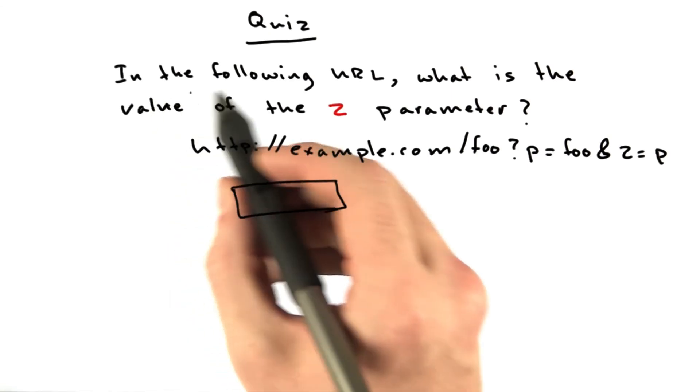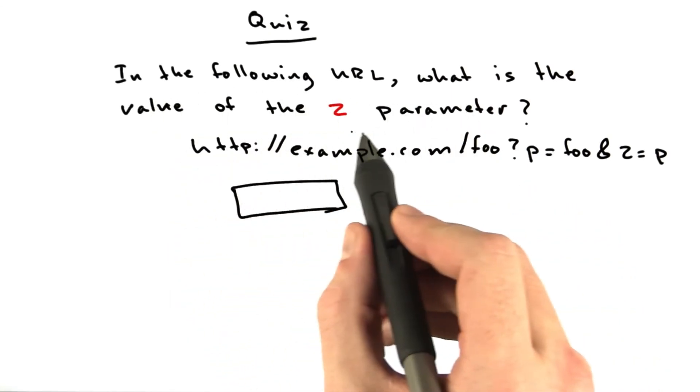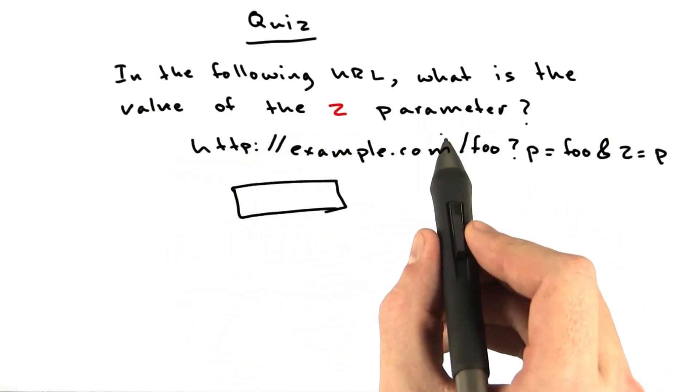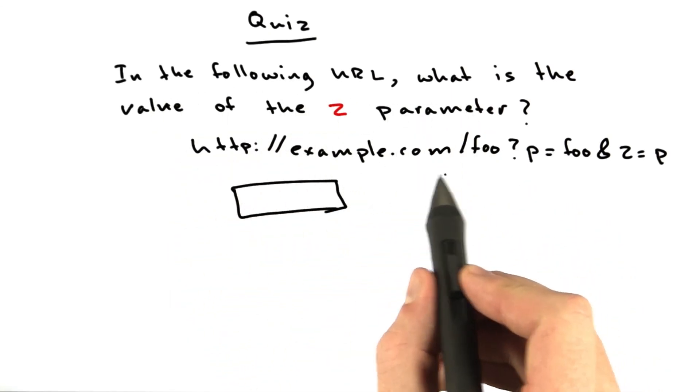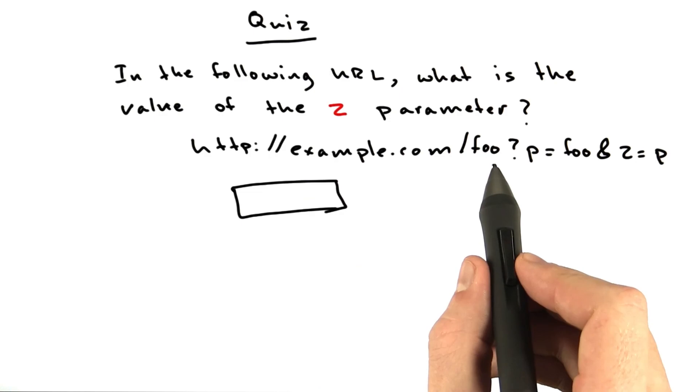In the following URL, what is the value of the z parameter? Here is your URL.